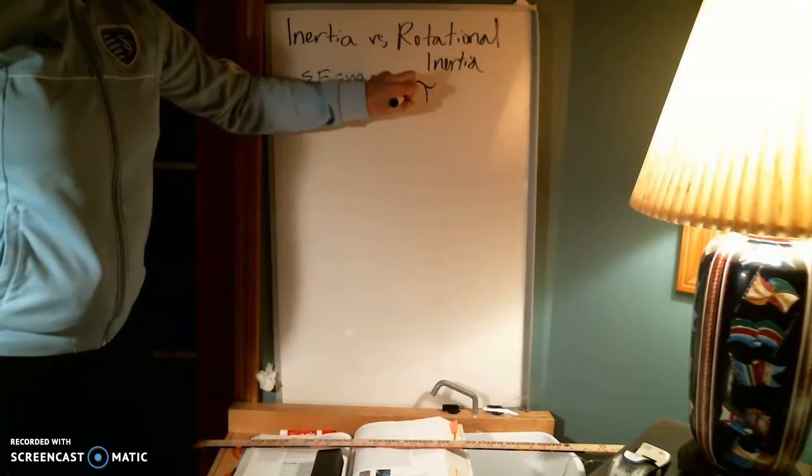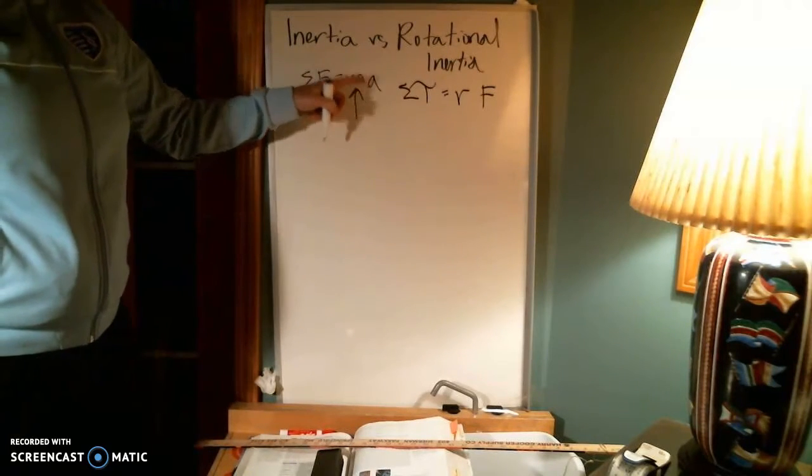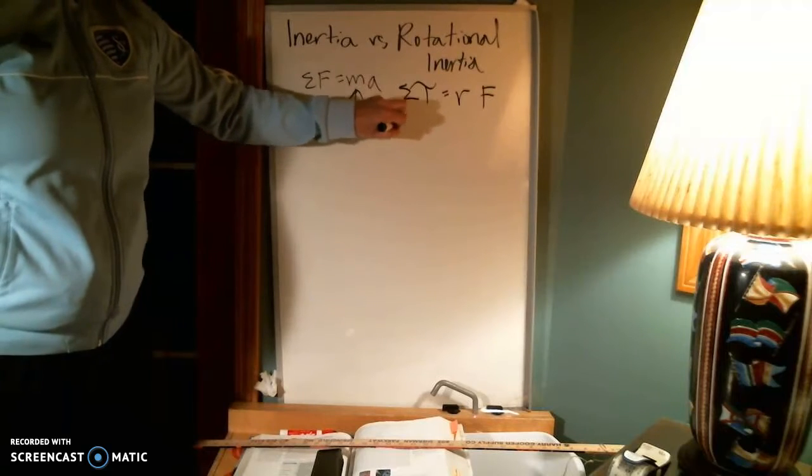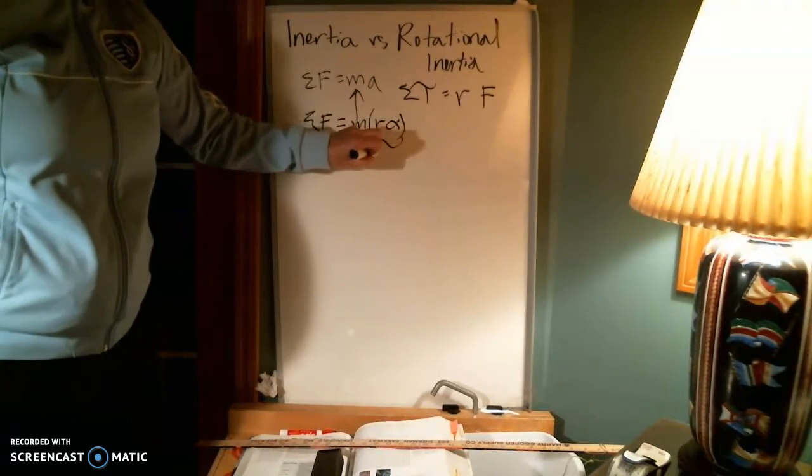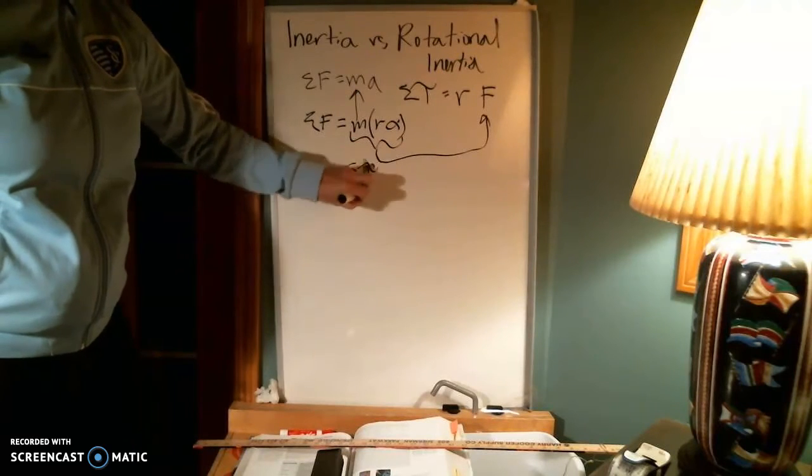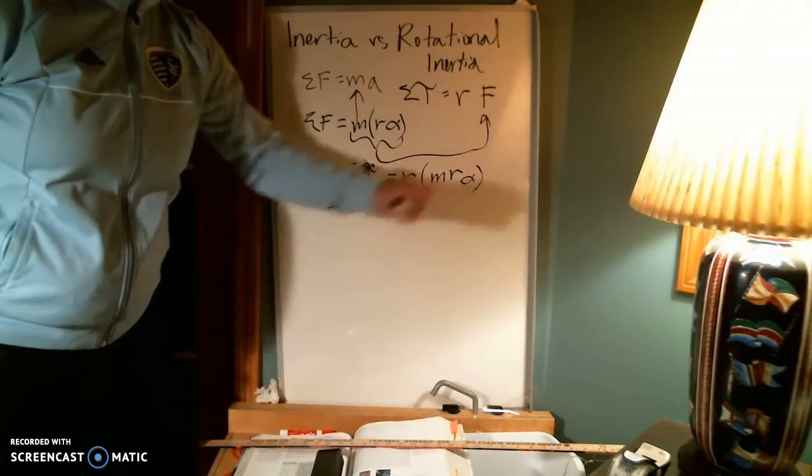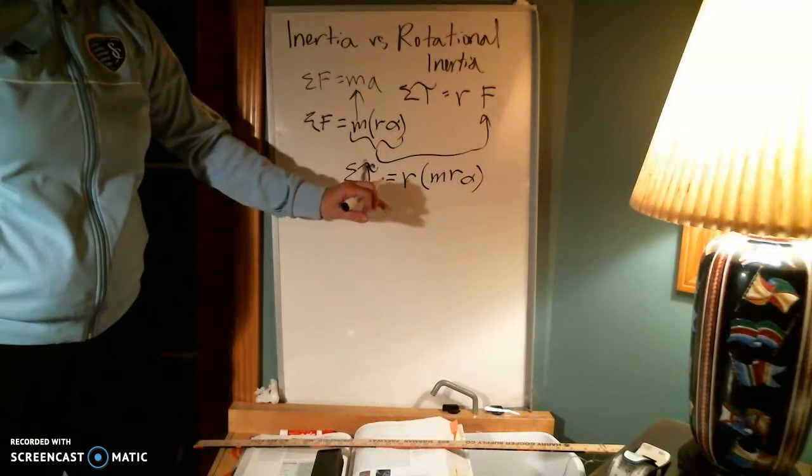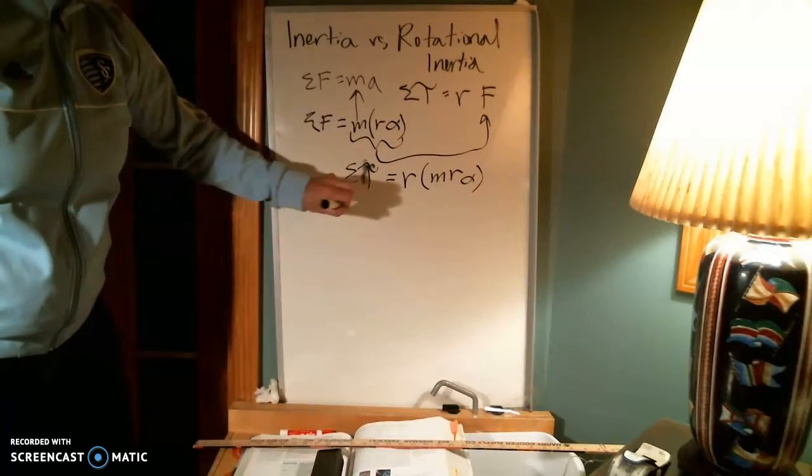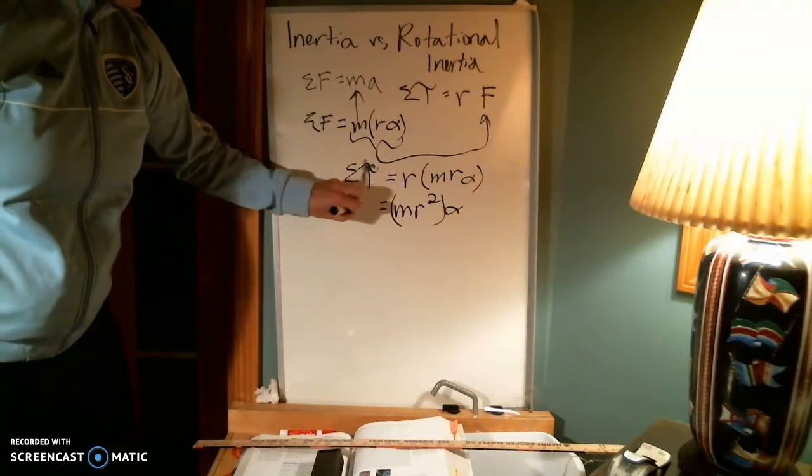So, we've said that net torque was related to that radius times that force. And if I want to get this into kind of a rotational quantity, that force is equal to mass times acceleration. And then I'd have radius times alpha. So, I'm going to take this and plug it in there. So, net torque is going to be equal to radius times mass, radius, and alpha. And if I can combine some things together and kind of have alpha in the same rotation or location as it is with its linear equivalent, I will have M-R squared times alpha.